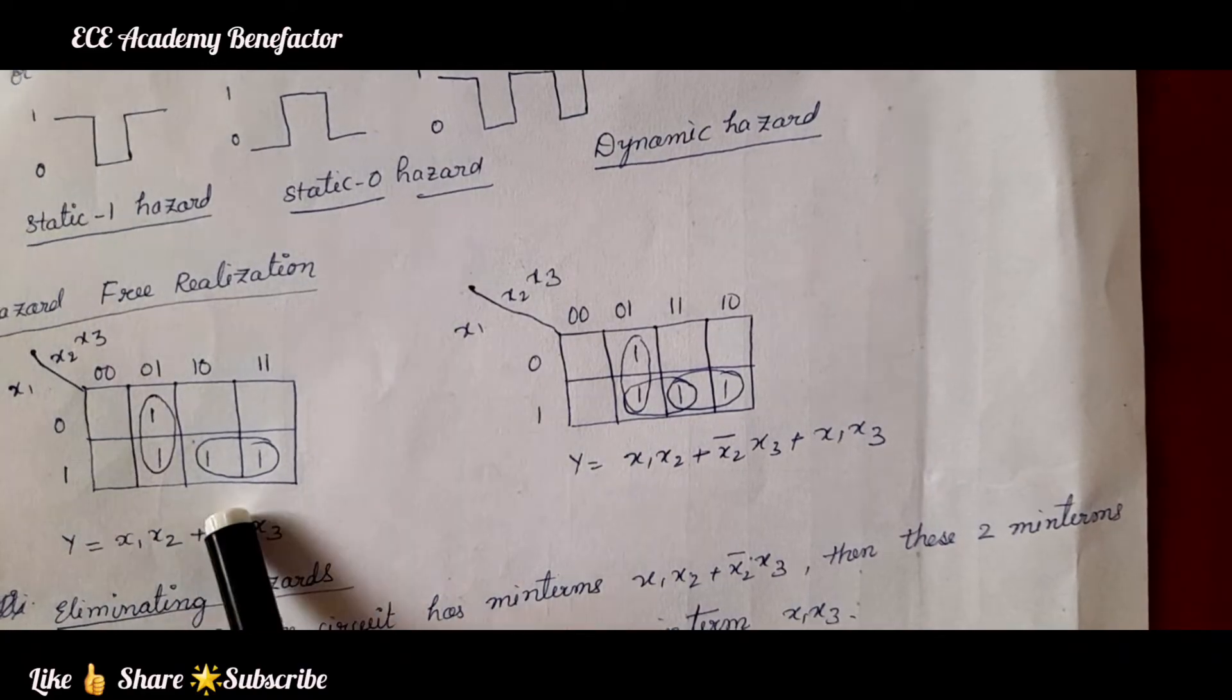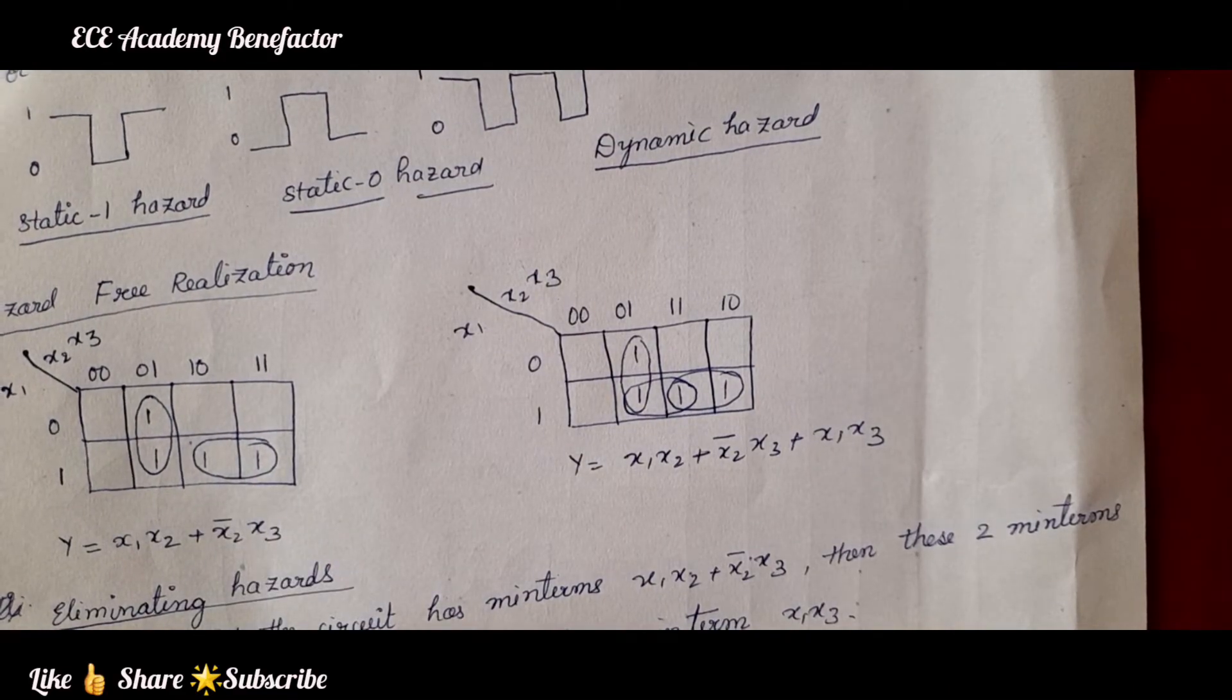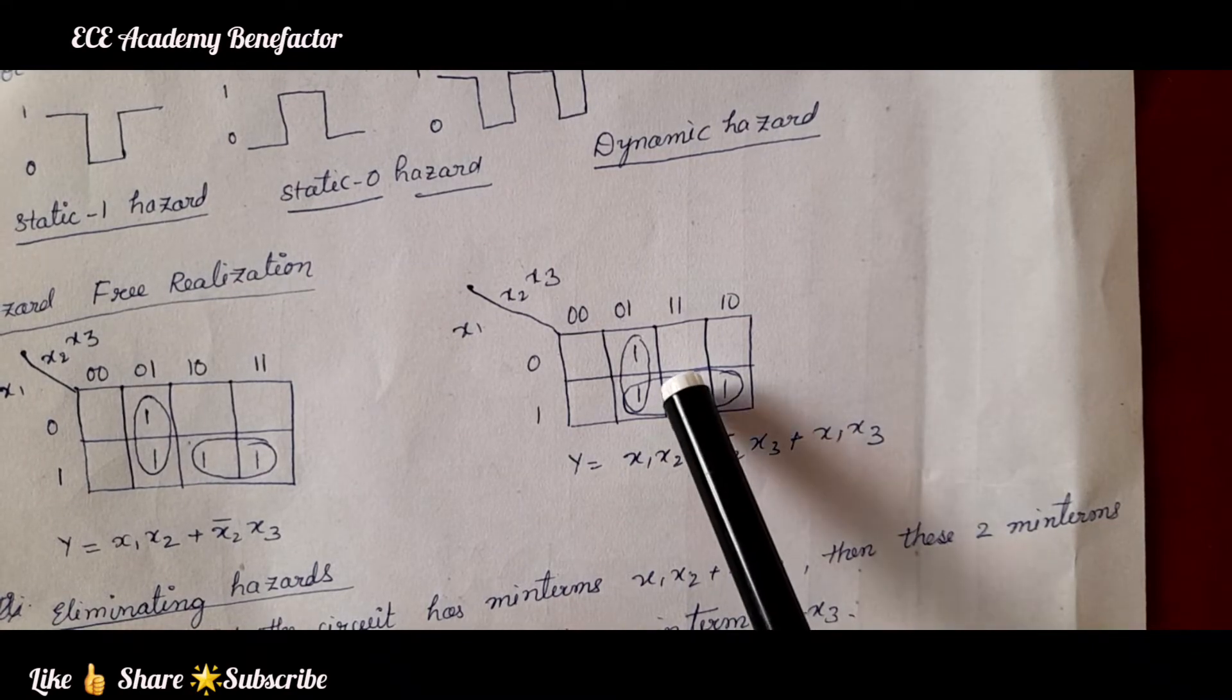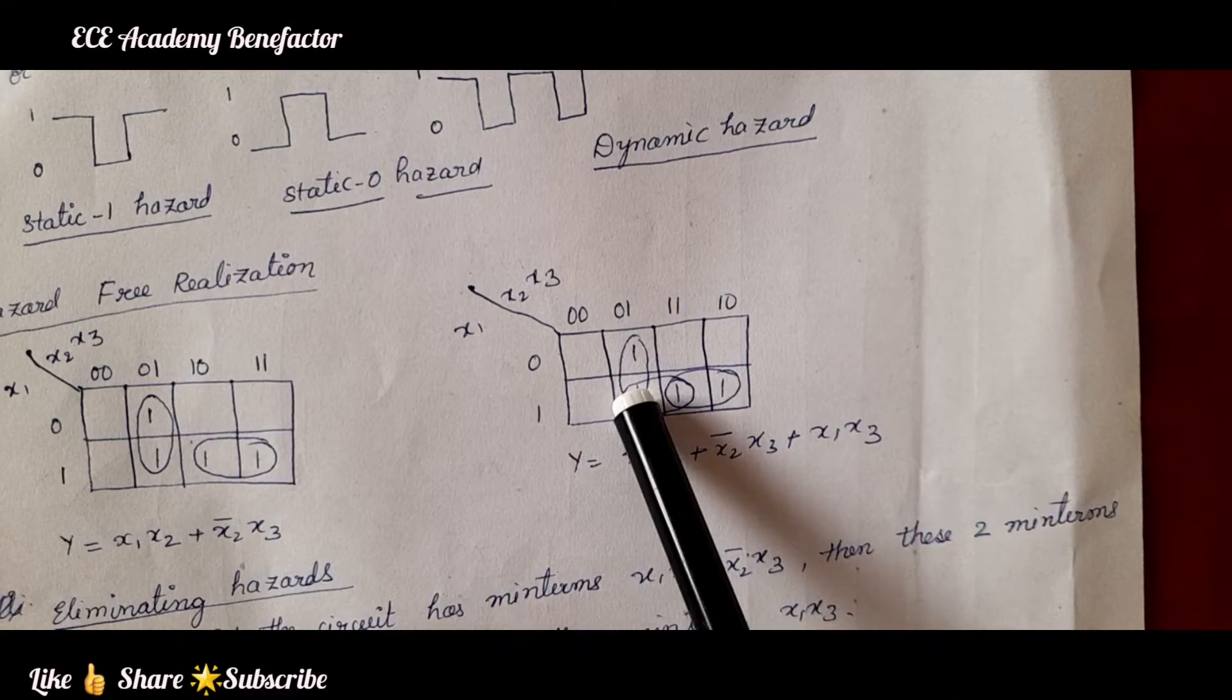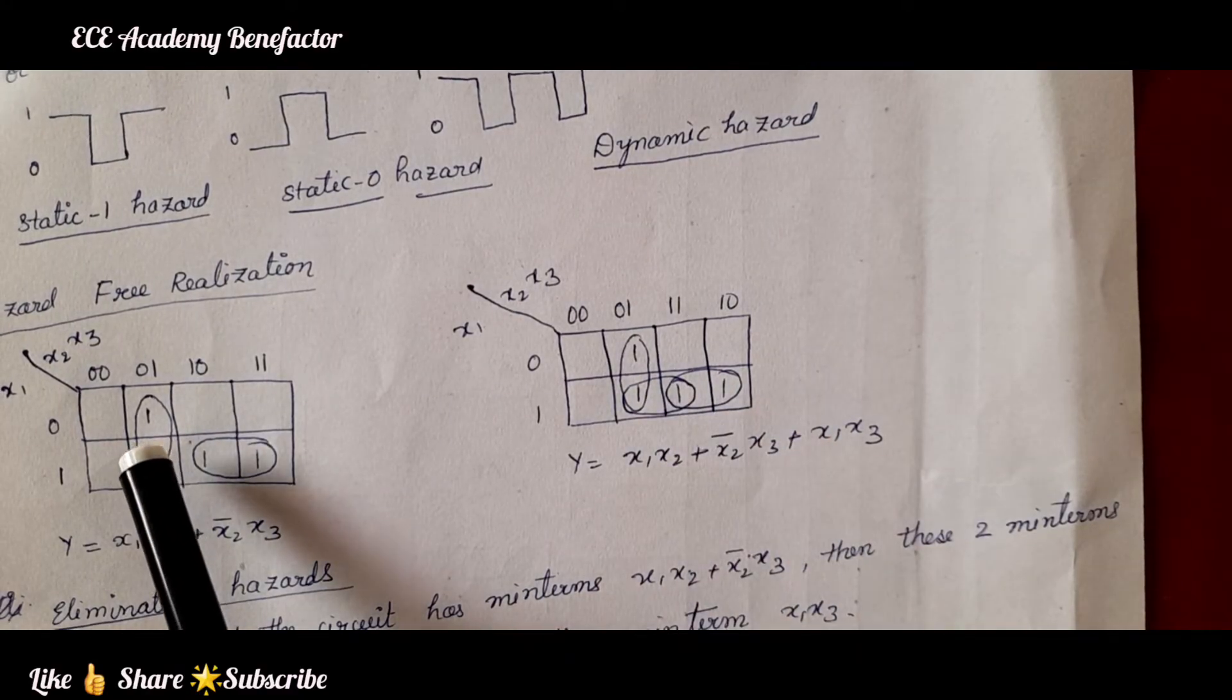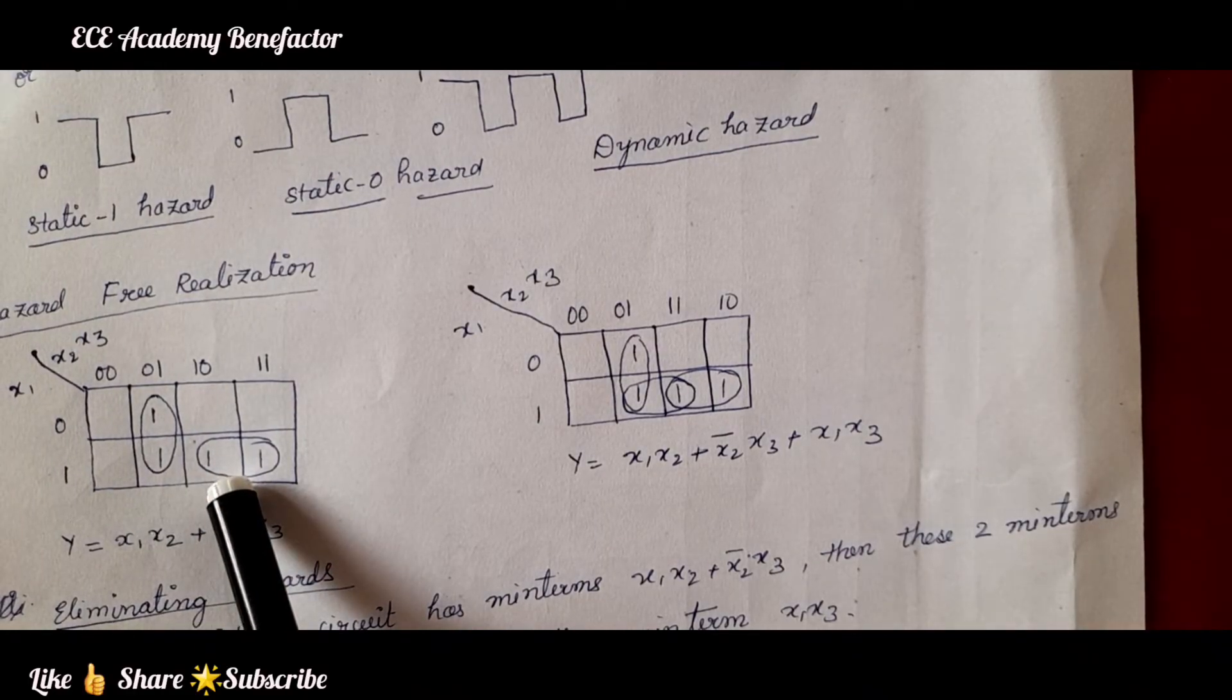Now, this circuit will have some hazard. To overcome this hazard what we have to do? We have to introduce one more group like this. So, we are enclosing this group. Here previously this circuit there is a possibility of obtaining a hazard.